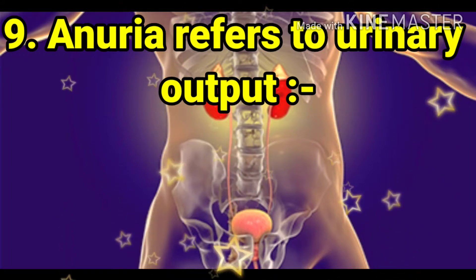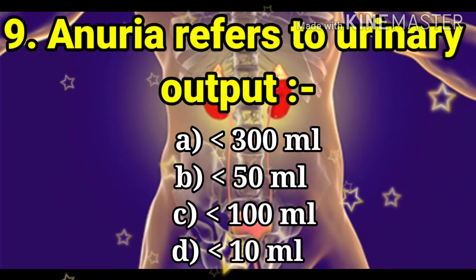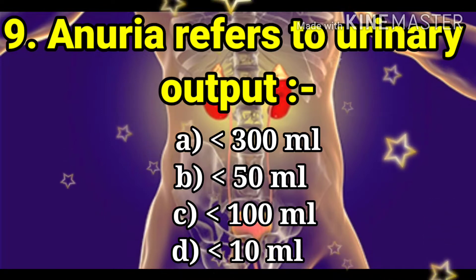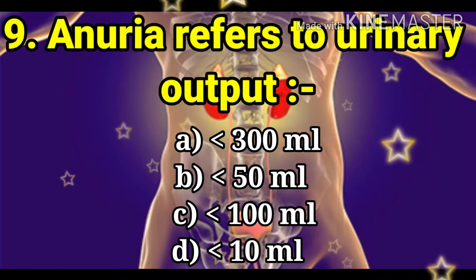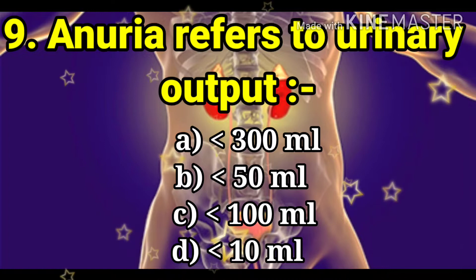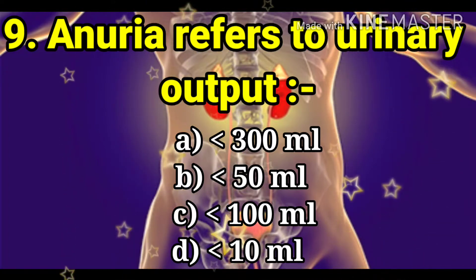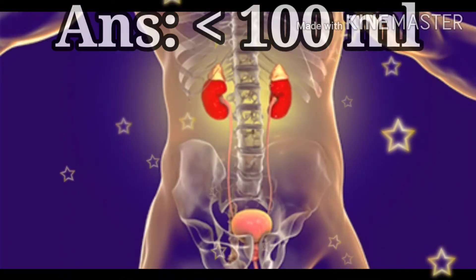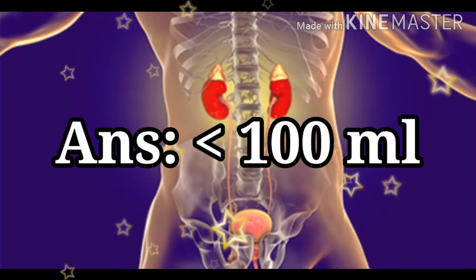Next question: anuria refers to urinary output of what level? The options are less than 300 ml, less than 50 ml, less than 100 ml, and less than 100 ml. The answer is less than 100 ml.